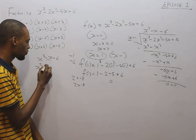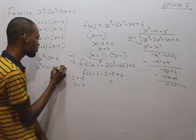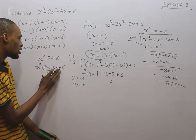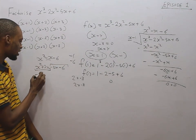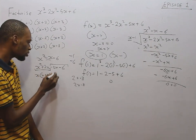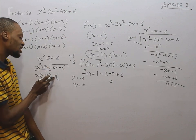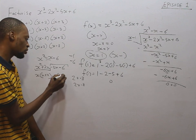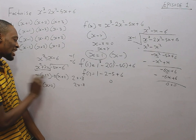So you split the middle term: s squared plus 2s minus 3s minus 6. We have not changed anything because 2s minus 3s is the same as minus s — we just expanded. Now grouping in pairs: s squared and 2s — s is common, so factor out s to get s(s plus 2). Then minus 3s and minus 6 — minus 3 is common, so factor out minus 3 to get minus 3(s plus 2). So s plus 2 is common, and we pick it out.